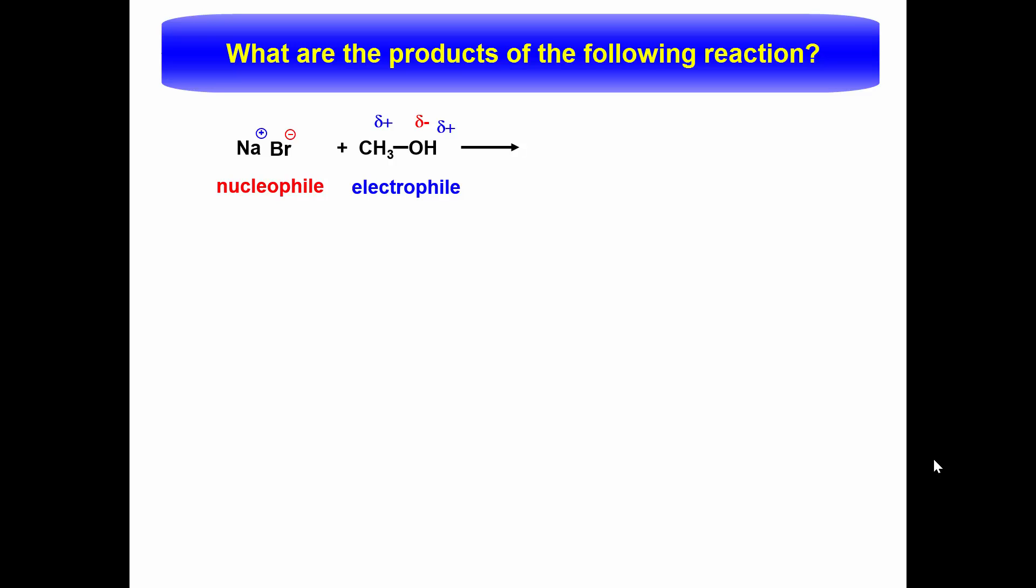The bromide ion is the nucleophile, since it has lone pairs to donate, and the electrophile would be methanol. The electrophilic center is the carbon with the partial positive charge.